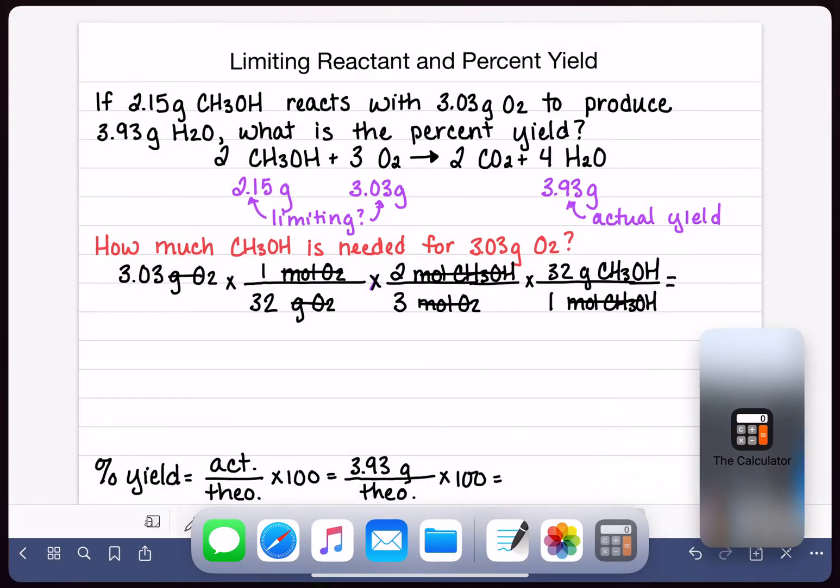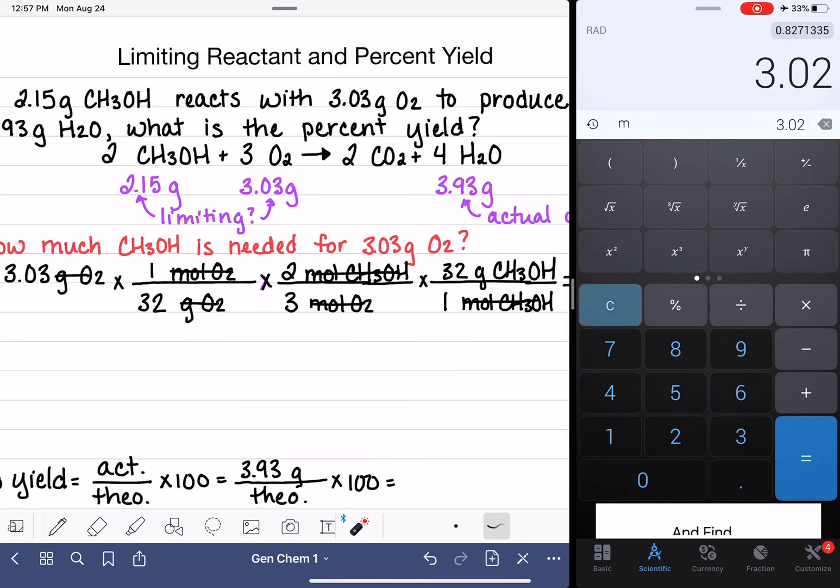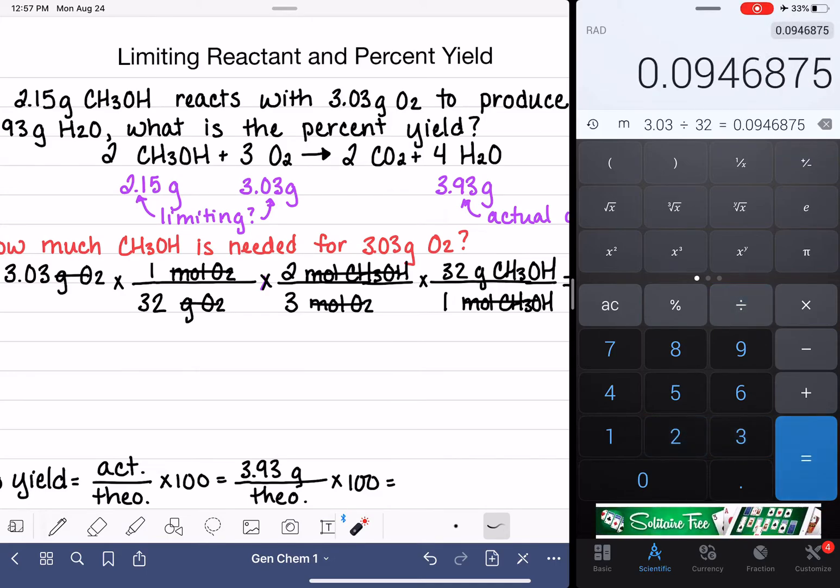So let's get our calculator out, and let's do the math for this. 3.03 divided by 32 times 2 divided by 3 times 32.